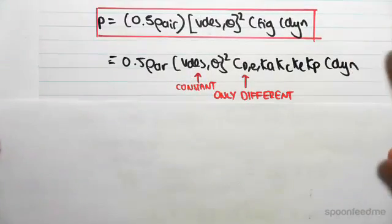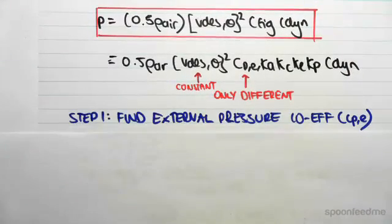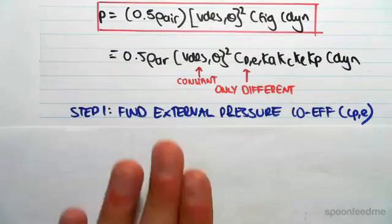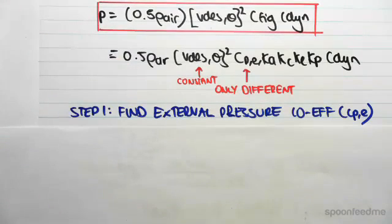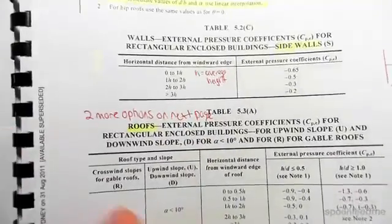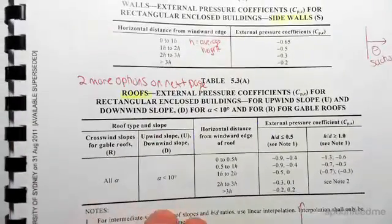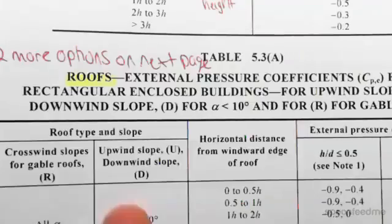This is the only difference in terms of this formula compared to windward. And the design wind speed, which we'll be talking about next in the next video. So the external pressure coefficient cpe, now we're going to be using table 5.3a on page number 32.